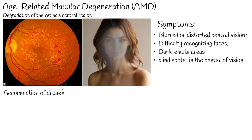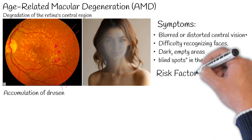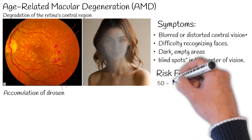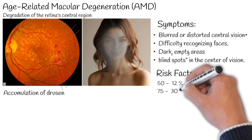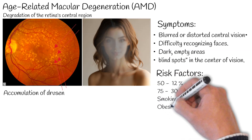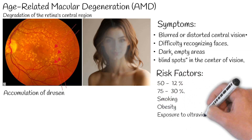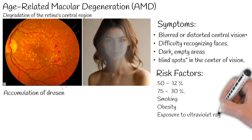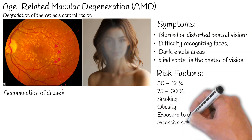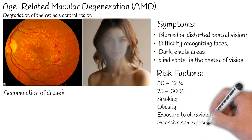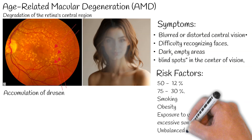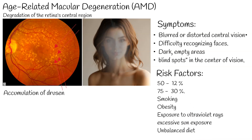The most important risk factor for macular degeneration is age. At age 50, the risk of macular degeneration is 12%, while after age 75, this risk is more than 30%. Other factors exacerbating the risk include smoking, obesity, exposure to ultraviolet rays, excessive sun exposure, and an unbalanced diet.